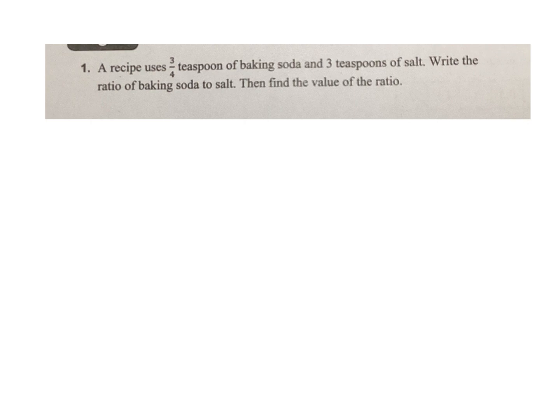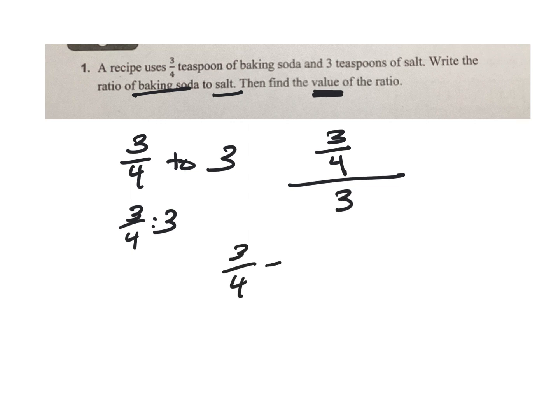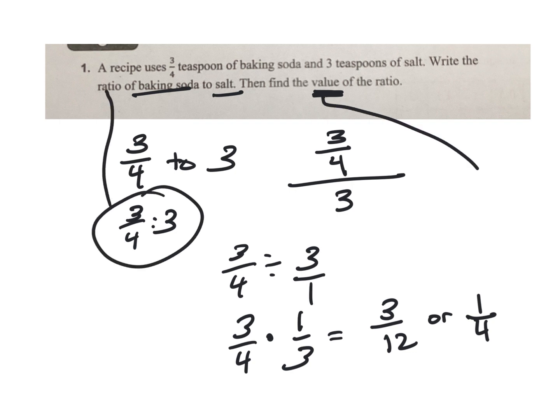Number 1. A recipe uses 3/4 teaspoon of baking soda and 3 teaspoons of salt. Write the ratio of baking soda to salt. Baking soda is first, so it's 3/4 to 3. Now find the value of the ratio. 3/4 divided by 3. Put that over 1. Do 3/4 multiply the reciprocal and that gets me 3/12 or 1/4. So the ratio is there and the value is 1/4.